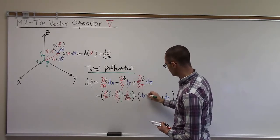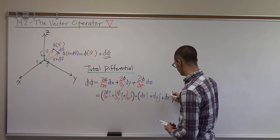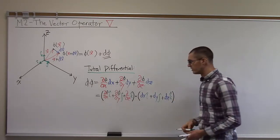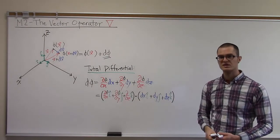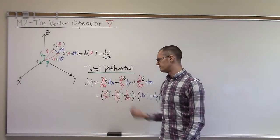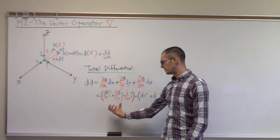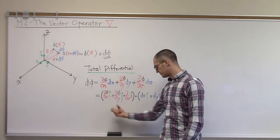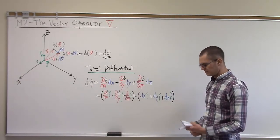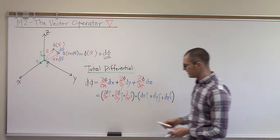And each of those is multiplied by the unit vector in the coordinate directions. So we can see that the total differential d phi is a dot product between this vector here and this dx vector.